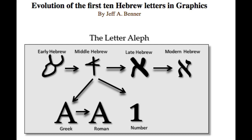I'll also leave this website in the description box from ancient-hebrew.org and the evolution of the first 10 Hebrew letters in graphics. When it comes to the first letter, the Al or Aleph, this is how it looked in the early Hebrew — it looks just like an ox head. Then in the middle Hebrew which is the Paleo, used during the time of King David all the way up until Babylonian captivity; and then the late Hebrew which emerged right after Babylonian captivity until the modern Hebrew used today.